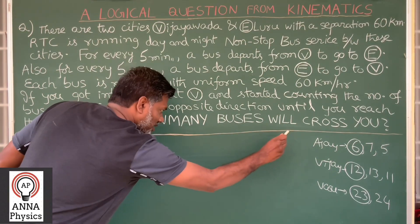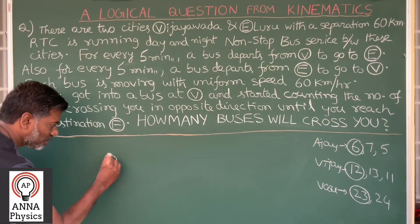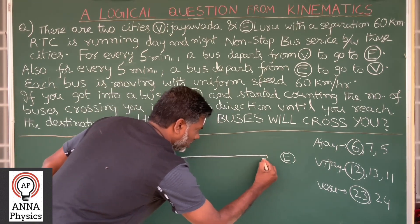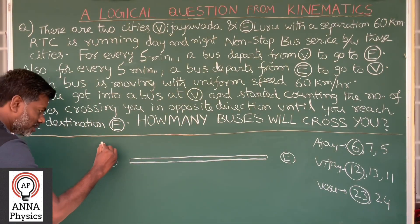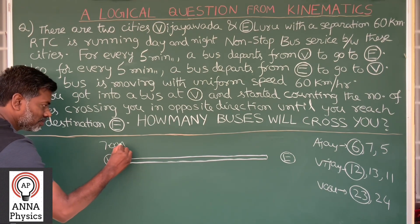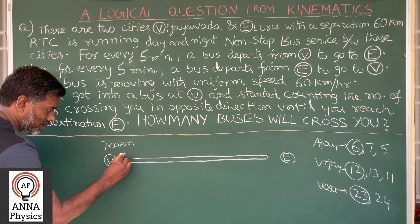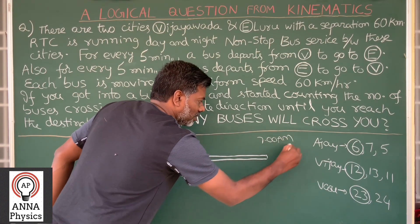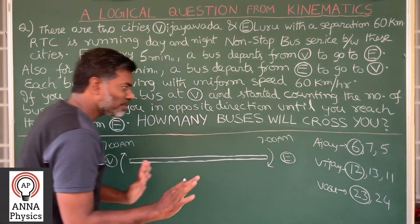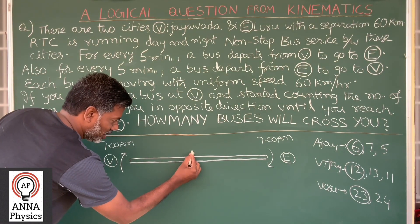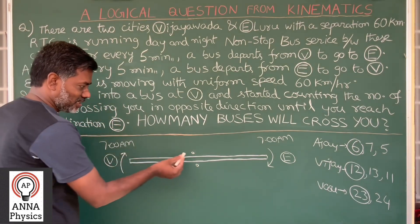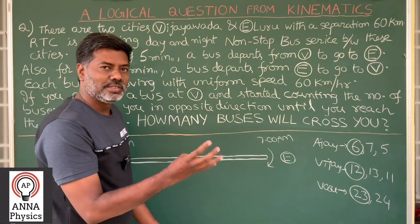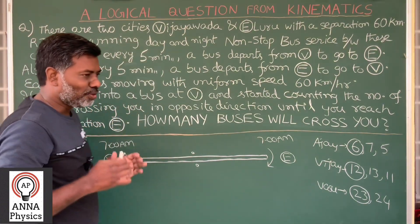Now, let me clear the wrong sense of Ajay first. This is Vijayawada, this is Eluru — straight road, 60 km distance. He reached Vijayawada bus terminal at 7 a.m. A bus is ready to depart, he got into this bus. He is thinking that at the same time, 7 a.m., a bus departs from Eluru also — there is nothing wrong with that. These two buses will meet in the middle, so he is thinking that this is the first bus to cross him, and his counting begins with 1.